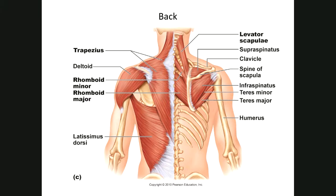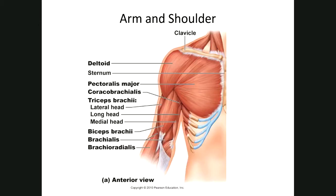The latissimus dorsi and deltoid are worth a close look because the deltoid is a frequent target for injections. On the front we have a picture showing the deltoid, pectoralis major, coracobrachialis, and the triceps is shown from the back part — we'll need to look at it from another angle.